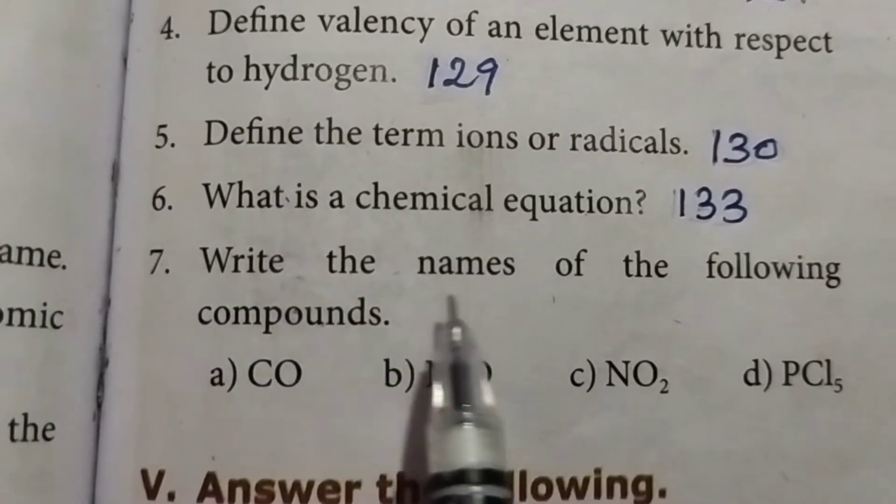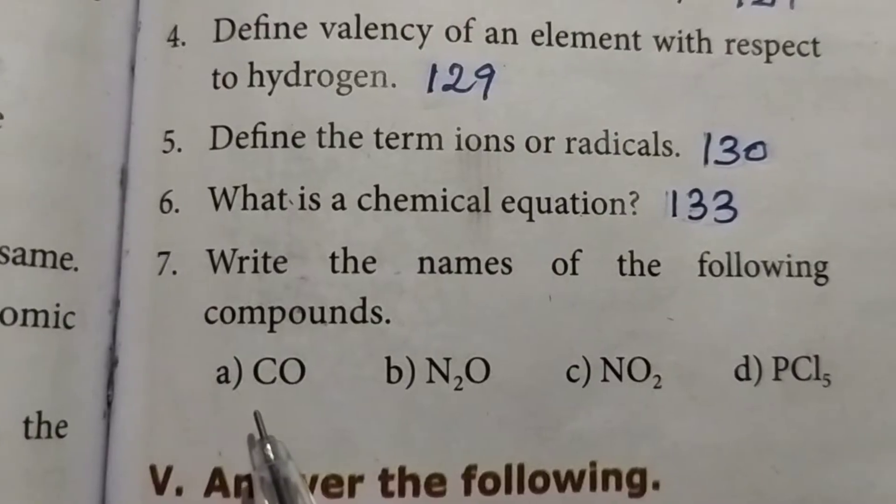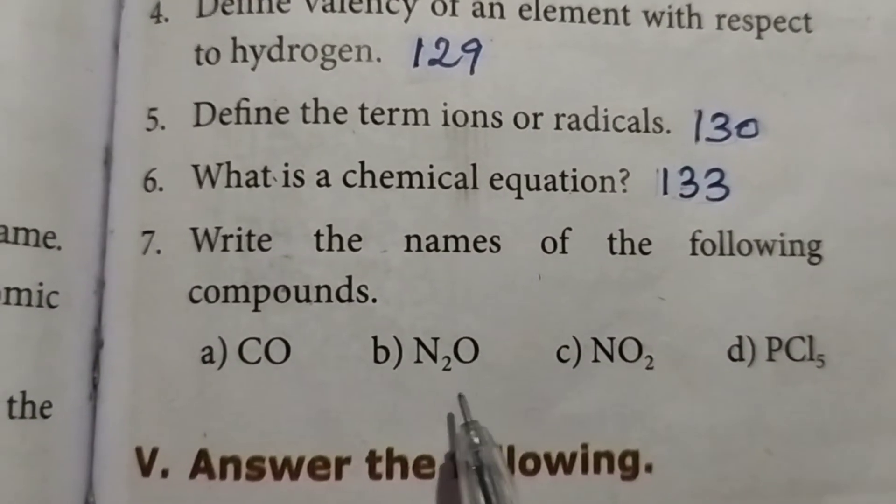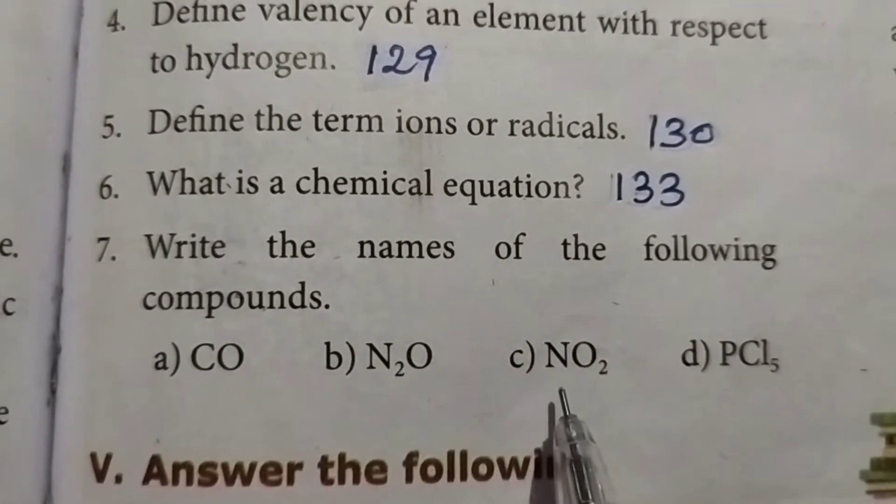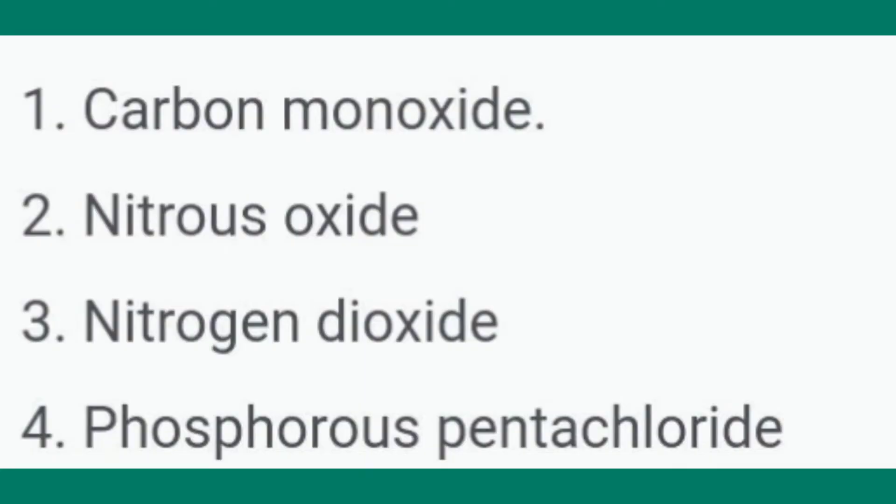Seventh one: write the names of the following compounds. Option A: CO. Option B: N2O. Option C: NO2. Option D: PCl5. Answer for first one: carbon monoxide. Second one: nitrous oxide. Third one: nitrogen dioxide. Fourth one: phosphorus pentachloride.